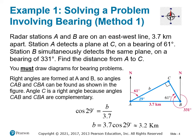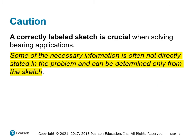Drawing these diagrams is vital to master bearing problems. A correctly labeled sketch is crucial when solving bearing applications. Often some of the necessary information is not directly stated in the problem — the bearings given were not the angles inside the triangle; we had to figure them out. The angle of cosine 29 degrees was not given; we had to derive it. We also had to verify that the triangle was a right triangle, since we only have formulas for right triangles.